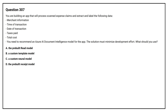Option A: The pre-built read model. Option B: A custom template model. Option C: A custom neural model. Option D: The pre-built receipt model.